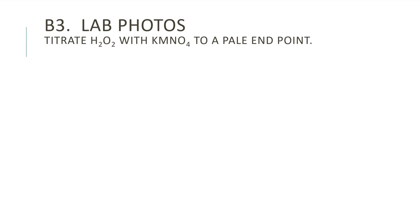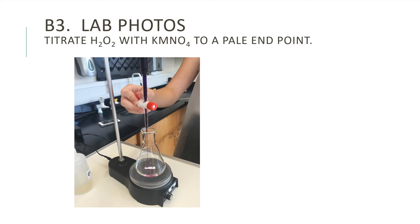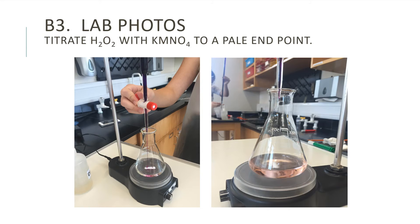B3: Lab Photos — Titrate hydrogen peroxide with potassium permanganate to a pale pink endpoint. The photo on the left shows the titration process with the magnetic stirrer and the potassium permanganate solution in the burette. The photo on the right shows the final product of the titration showing the pale pink endpoint.